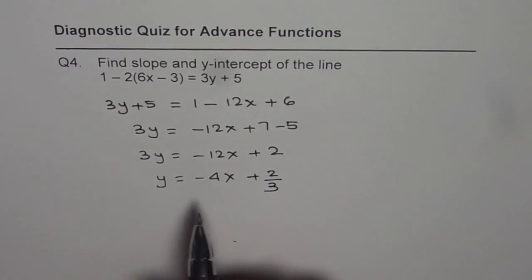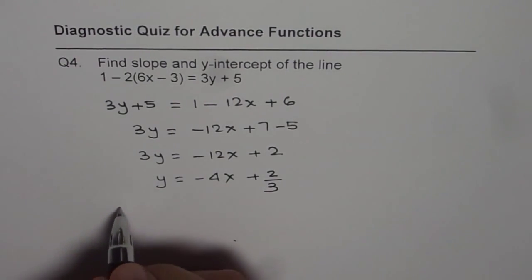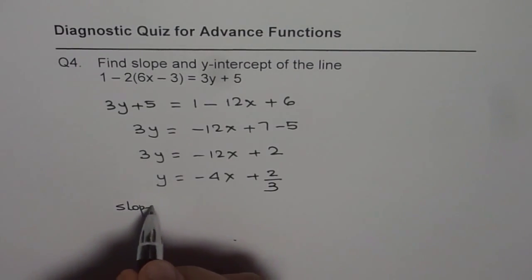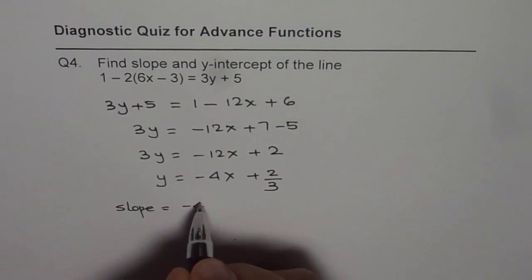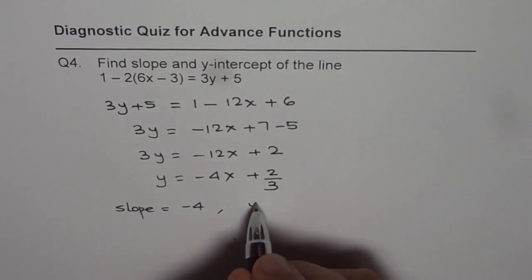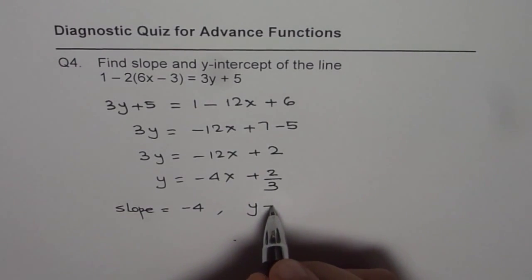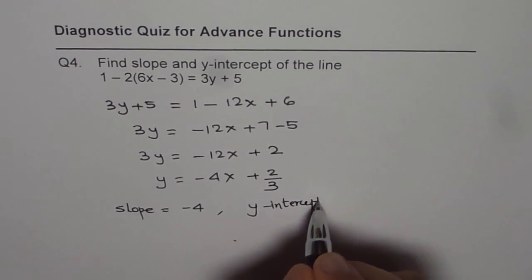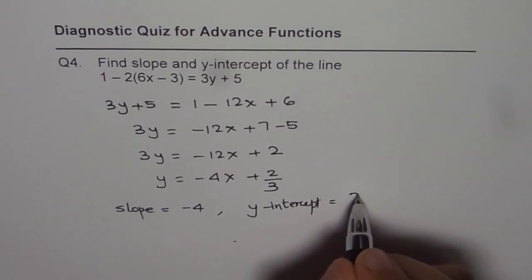Now this is an equation in slope intercept form, from where we get slope equals minus 4 and y-intercept which is b, y-intercept equals 2 over 3.